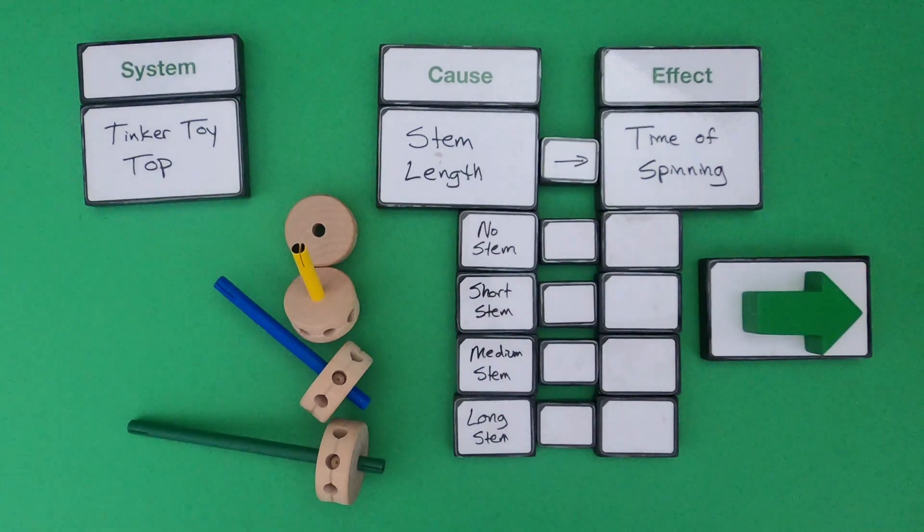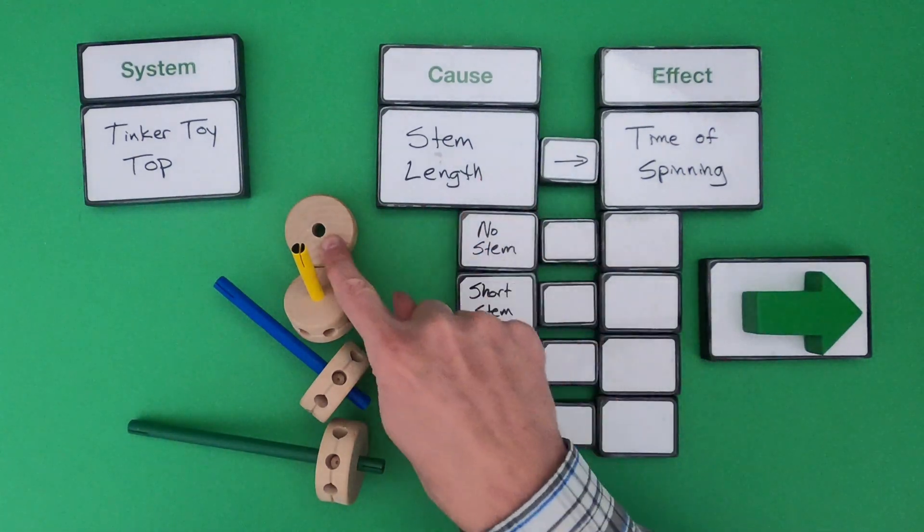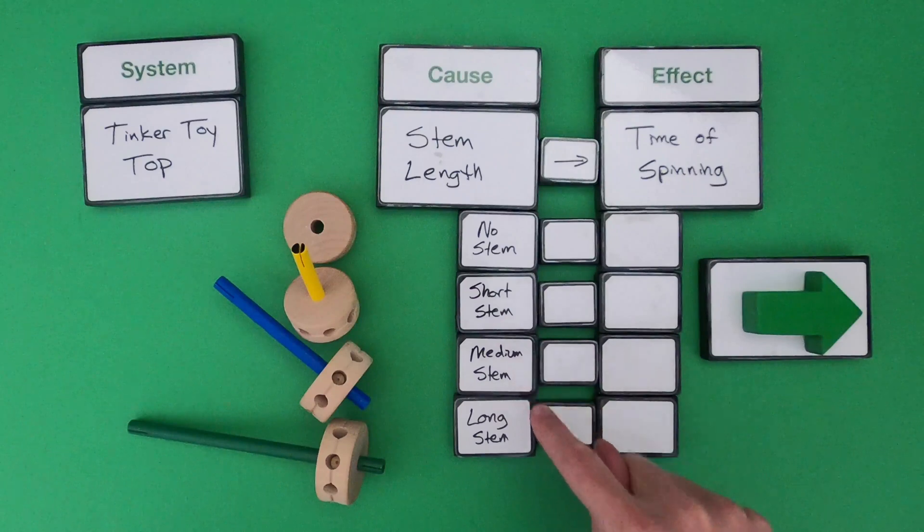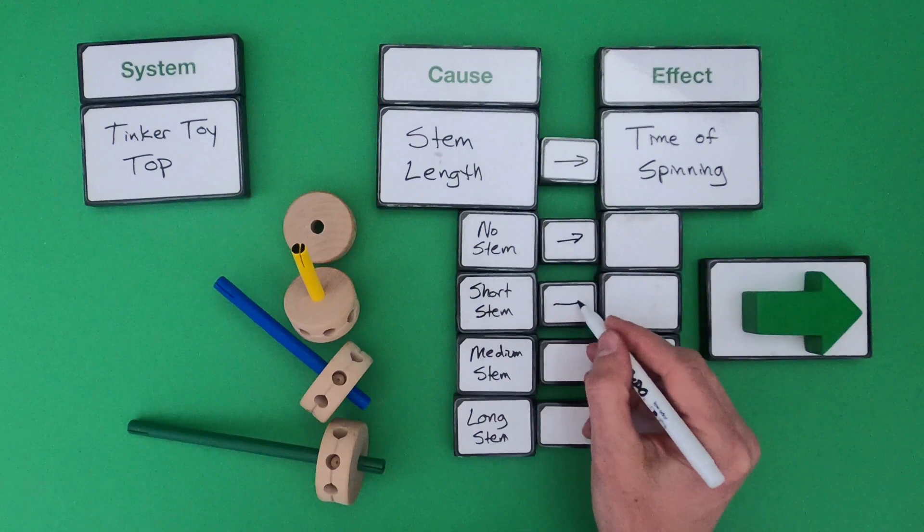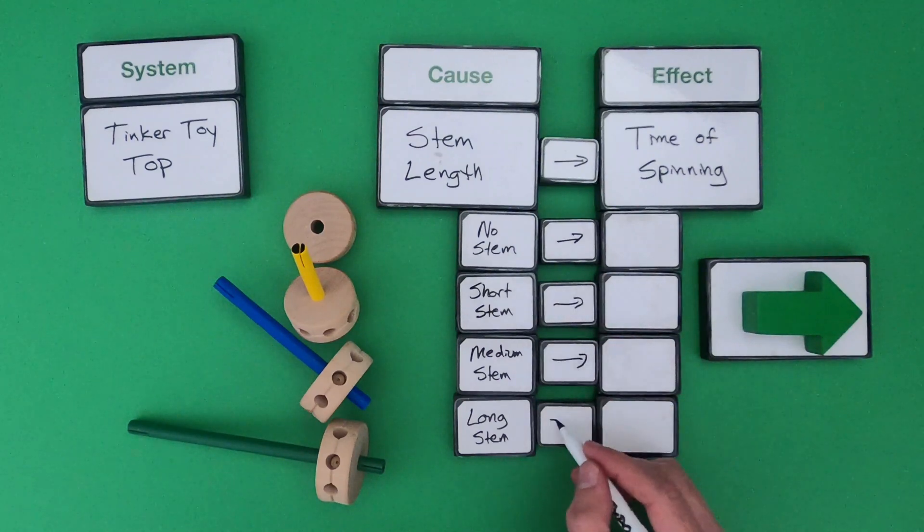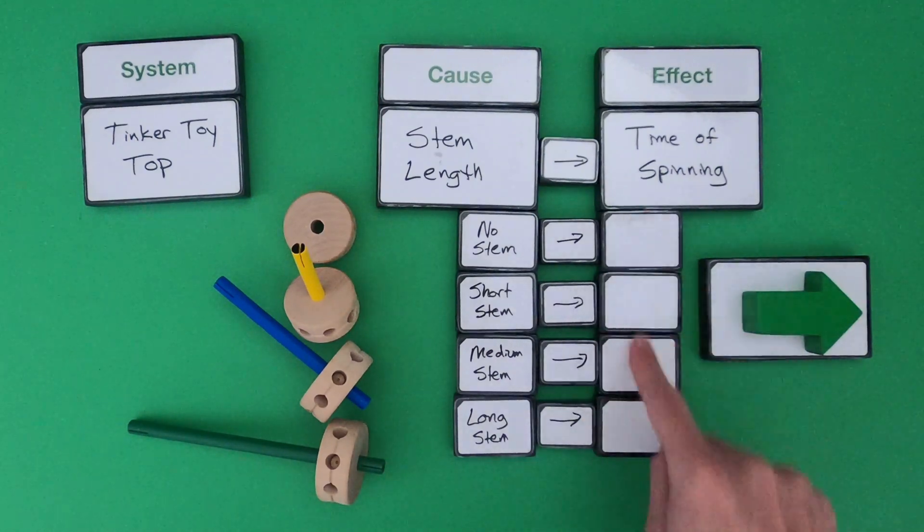You can see what I have now set up is I've got stem length going from no stem to short to medium and to long stem. I'm then going to investigate what is the relationship between each of these to the time of spinning, and then I'll fill this out.